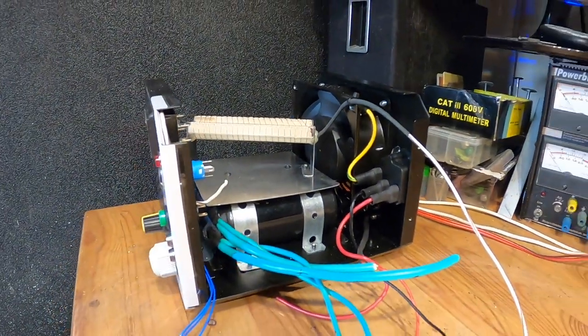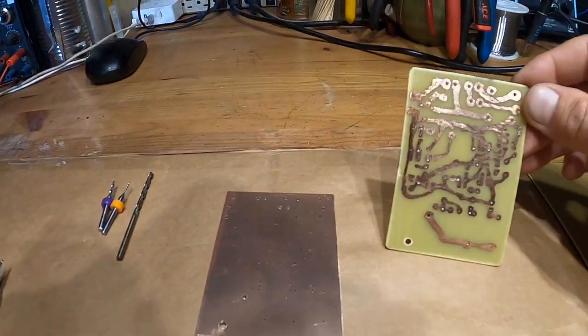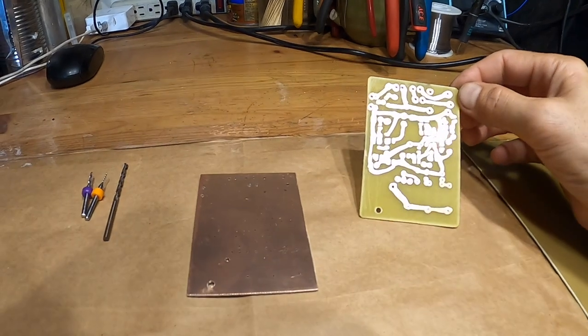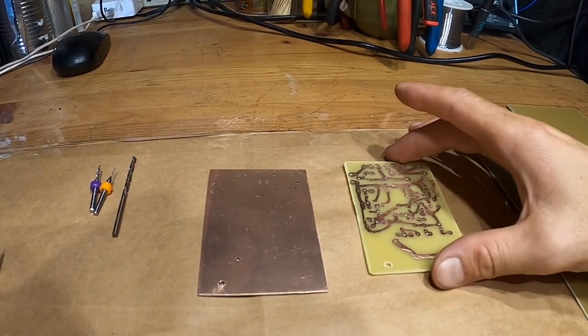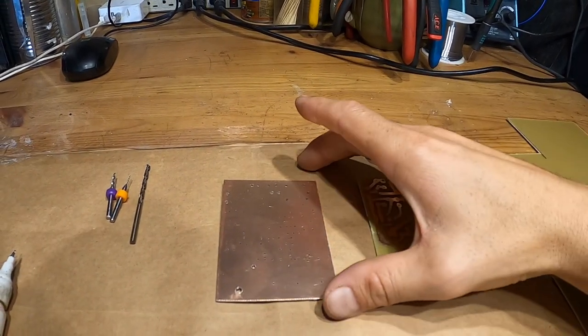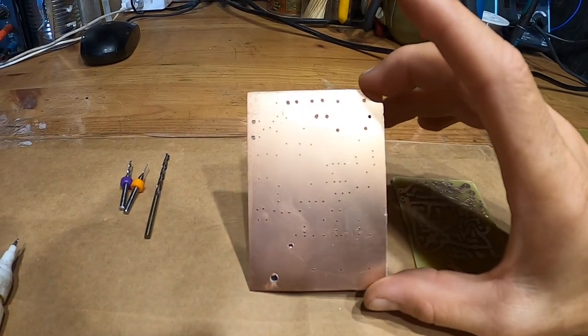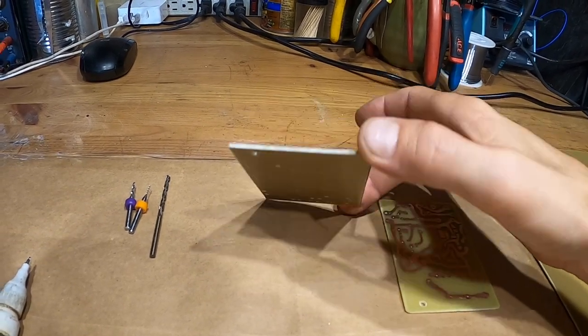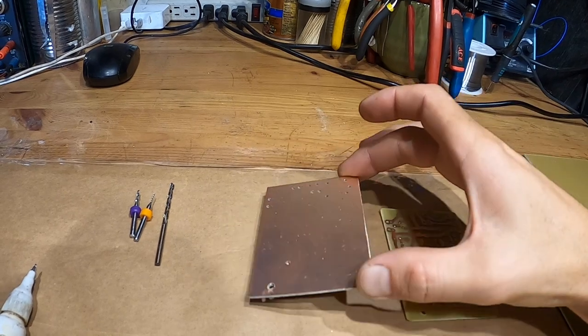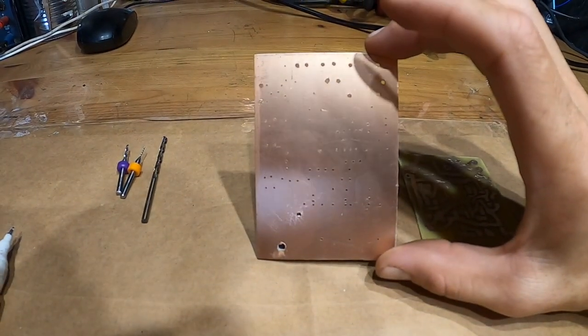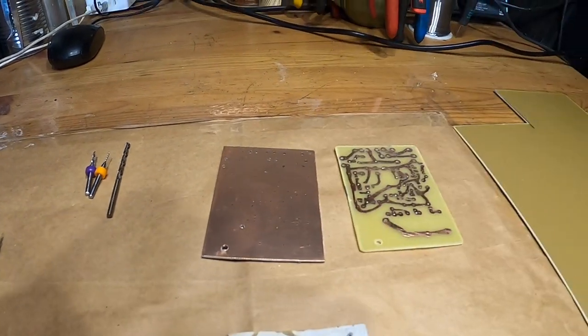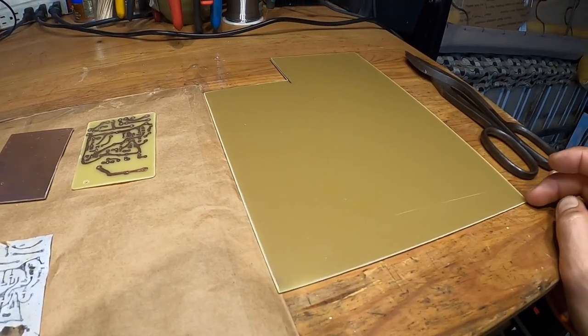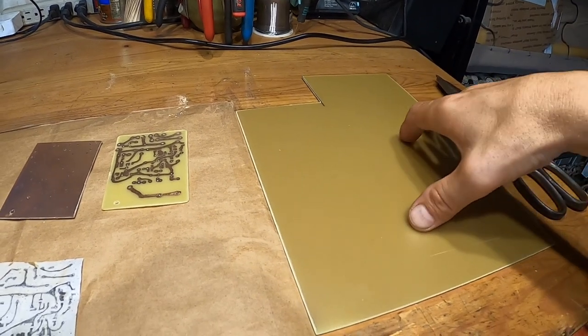All right, in front of you you have a just-drilled printed circuit board. This is a clad board that has fiberglass on the back and a layer of copper above it glued to it. You get those in different sizes: 4 by 6 or larger. This is an 8 by 11 sheet, and you cut out how much you need.